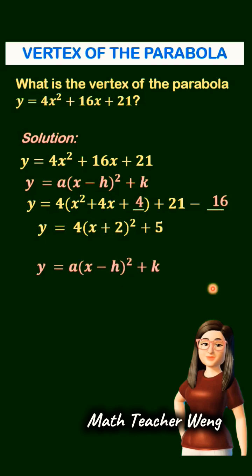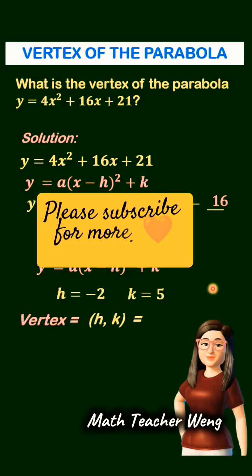This is now in the required form. And h is equal to negative 2 and k is equal to 5. Therefore, the vertex (h, k) equals negative 2, 5.